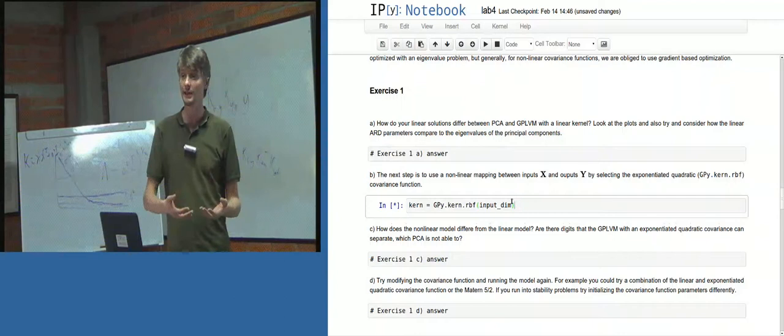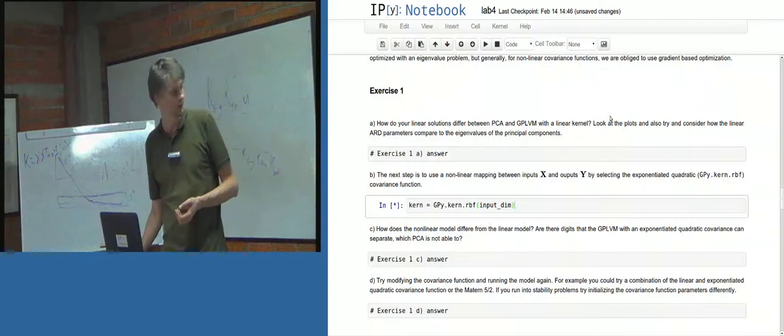And then rerun the model with that covariance function to see how your visualization differs. It's a non-linear mapping, so it should improve—you should get better separability between the classes. If you don't want to do four dimensions, I think it's best just to do two actually.